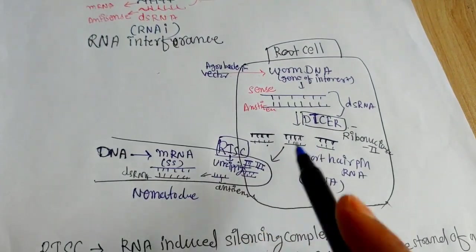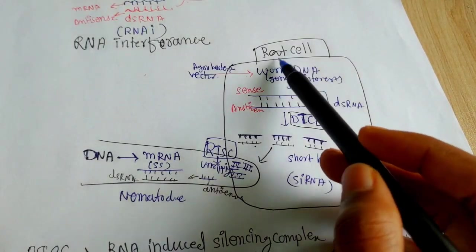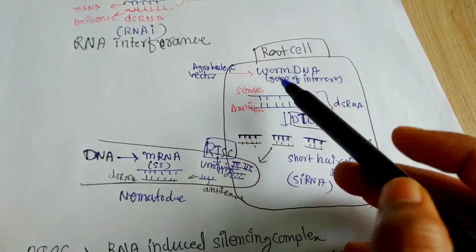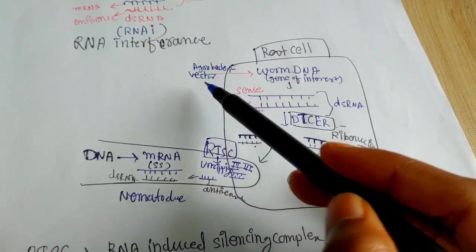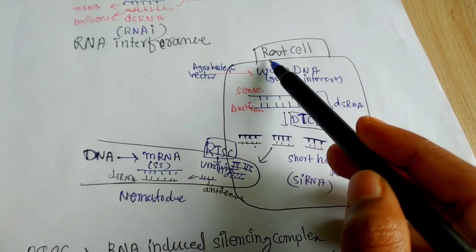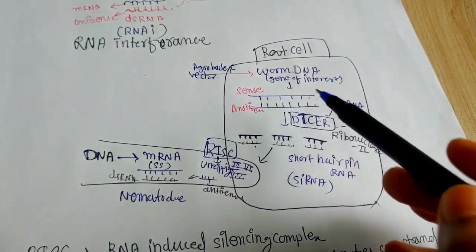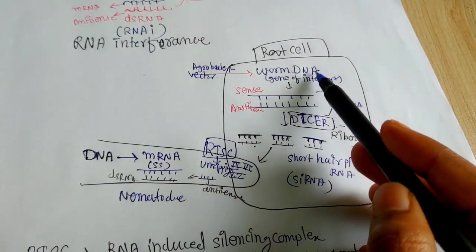So we can use this mechanism to create a transgenic tobacco plant. To create a transgenic tobacco plant, we are taking the root cell of tobacco plant and we are going to insert a worm DNA, that is the gene of interest, with the help of vector Agrobacterium into the root cell of the plant cell.